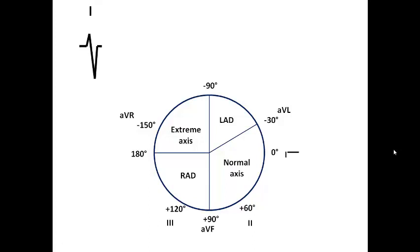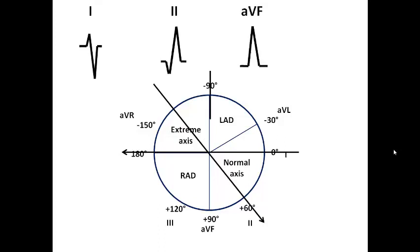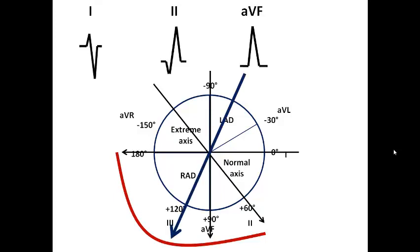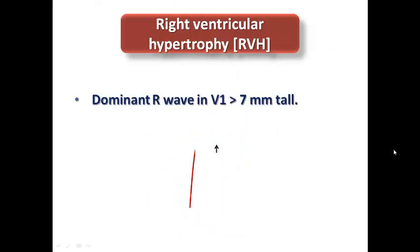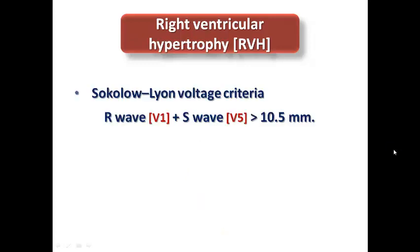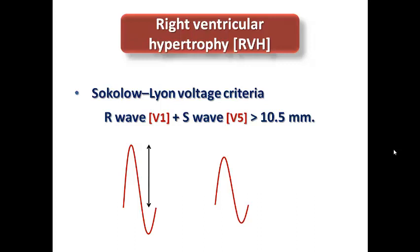From the ECG axis lecture, if lead I is predominantly negative and lead II and aVF are positive, the ventricular depolarization axis is directed toward the right lower quadrant, confirming right axis deviation, which is expected in RVH. Additionally, a dominant R-wave in V1 of more than 7 mm amplitude is one of the ECG features of RVH. The Sokolov voltage criteria — R-wave in V1 plus S-wave in V5 exceeding 10.5 mm — is also an ECG criterion for RVH.